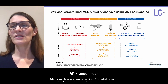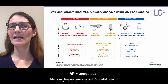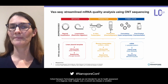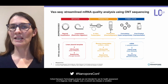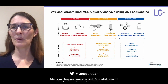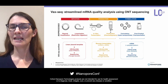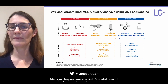Ligation and rapid sequencing provide data on the integrity and purity of the plasmid template. Both cDNA and direct RNA sequencing can be used to investigate the quality of mRNA vaccines, yielding diverse quality data, which I'll step you through.